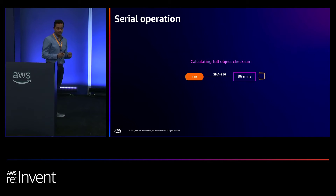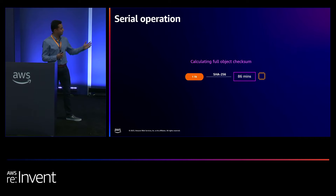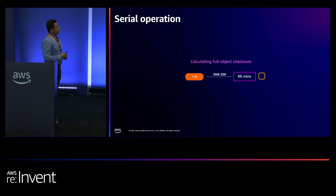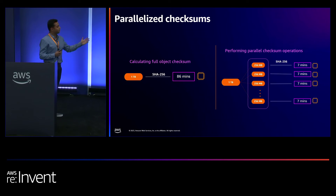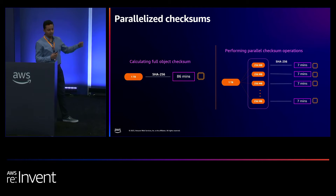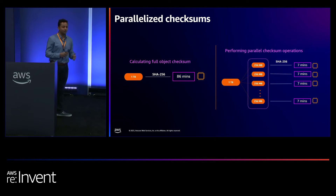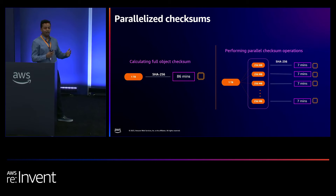Let's talk about performance. For a one-terabyte object using the SHA-256 algorithm, calculating a serialized checksum typically took about 86 minutes. Whereas calculating the parallel checksum of checksums took just seven minutes on the same EC2 instance. This has been a game-changer for customers who need to perform integrity checks at scale, whether as a durability practice or a compliance requirement.